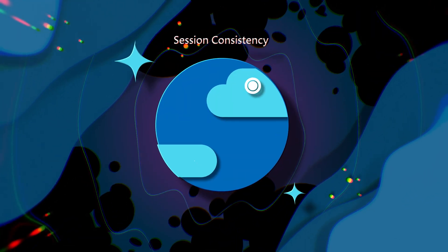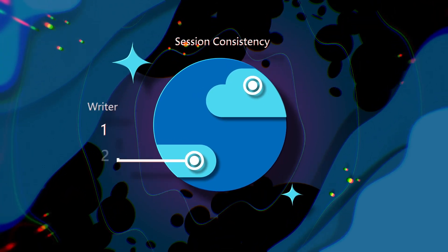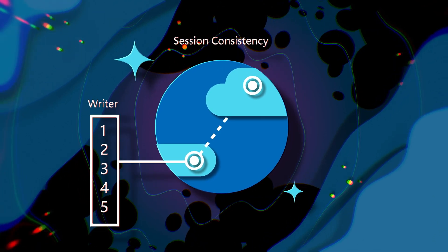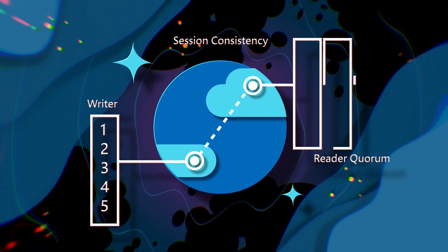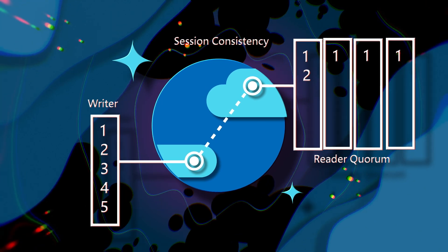Session consistency would be used for something like a wall post. When I post on a friend's wall, if I refresh the page, I don't want that post to disappear. Otherwise, I'll post again, and all of a sudden, my friend thinks I really, really want to hang out. Session consistency ensures this doesn't happen and is the default consistency level used by most Cosmos DB accounts.